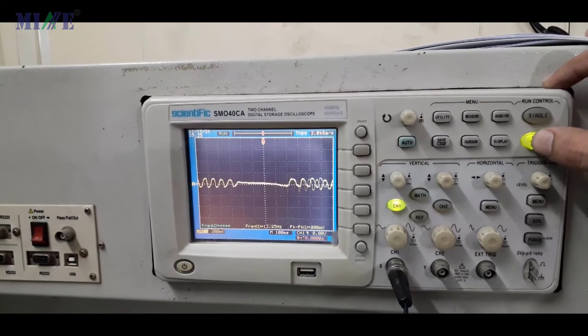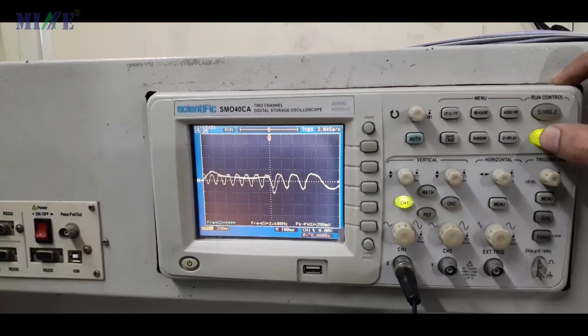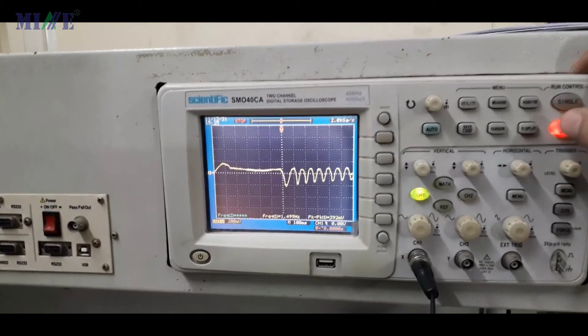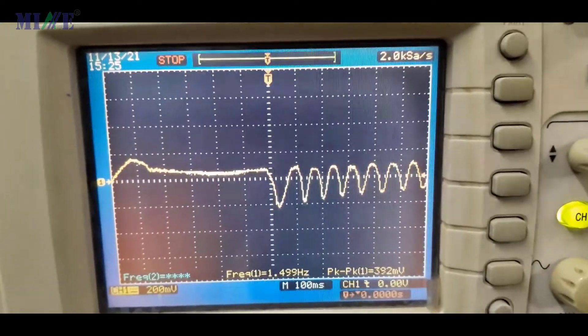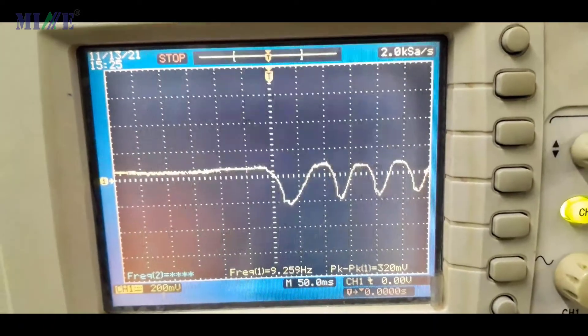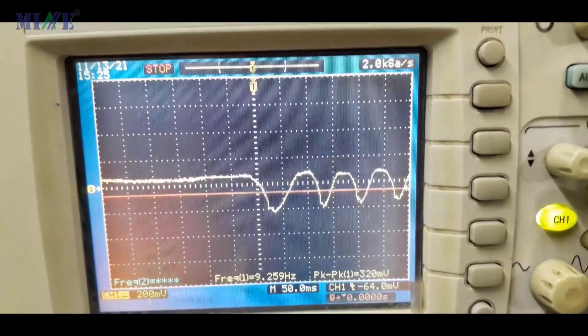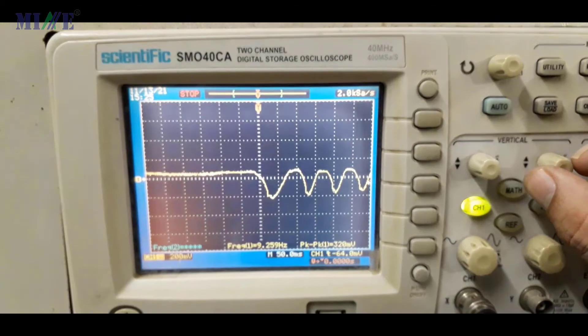When you receive this signal on DSO, press stop button for measuring time duration between two consecutive peaks. You can see that for getting this signal DSO channel 1 is used. Time base is set on 100 ms per division and amplitude base is set for 200 mV per division.